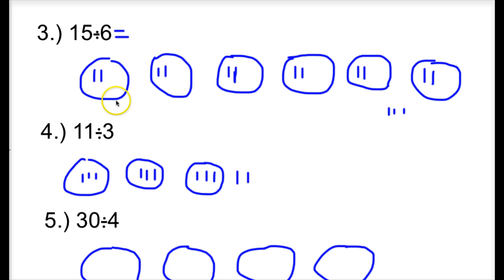Okay, let's see how you did. You should have your groups, which would be 6, 6 groups, 2 in each group, and 3 left over. So I can see that my quotient is 2, and my remainder is 3, on number 3.